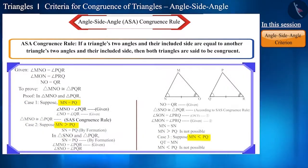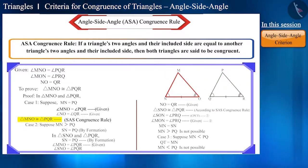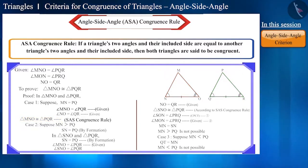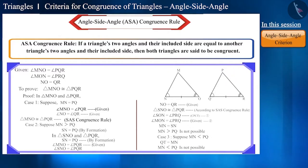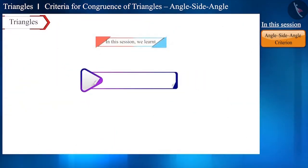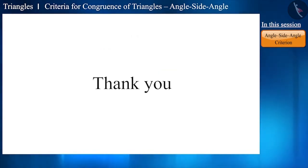Looking at the three possibilities, we can conclude that side MN is equal to side PQ. Therefore, according to the SAS congruence criterion, triangle MNO and triangle PQR will be congruent to each other. Thus, by using the side angle side criterion, we proved the angle side angle criterion, that is the ASA congruence rule. That's all in this session. Today we discussed the angle side angle ASA criterion for the congruence of triangles. See you in the next video. Thank you.